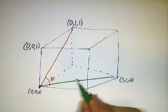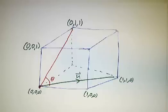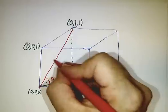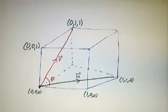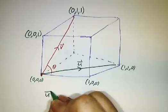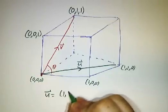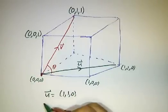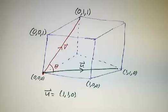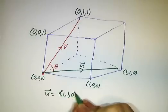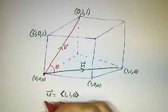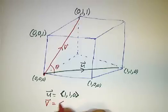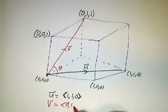So if you call this vector, let's call it u, and call this vector v, we have that u is 1, 1, 0. I guess I should use angle brackets, because it's a vector. And that v is 0, 1, 1.